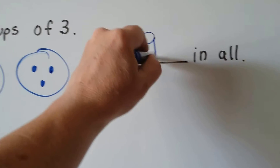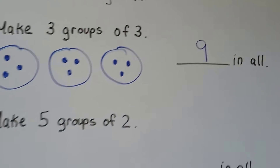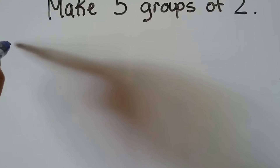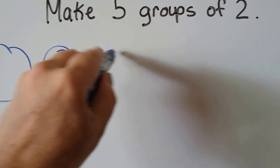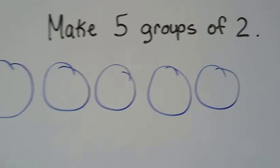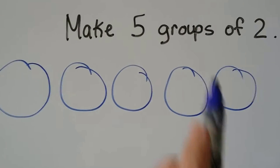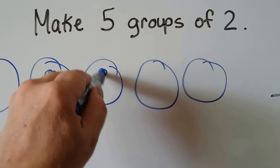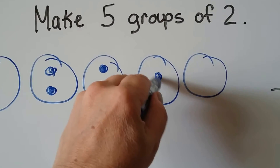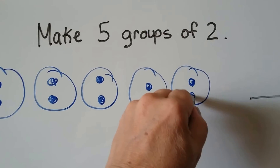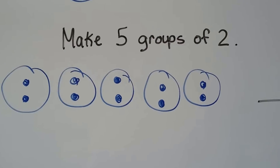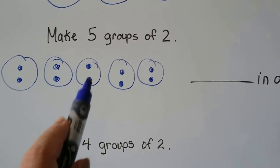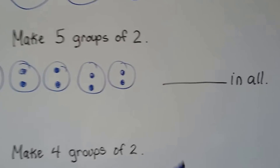Now that we have three groups of three, how many do we have in all? Three, four, five, six, seven, eight, nine — we have nine in all. Three groups of three makes nine. Now it says make five groups of two, so let's make our big circle groups first: one, two, three, four, five groups, and put two in each one. We have ten in all — skip count by twos: two, four, six, eight, ten.